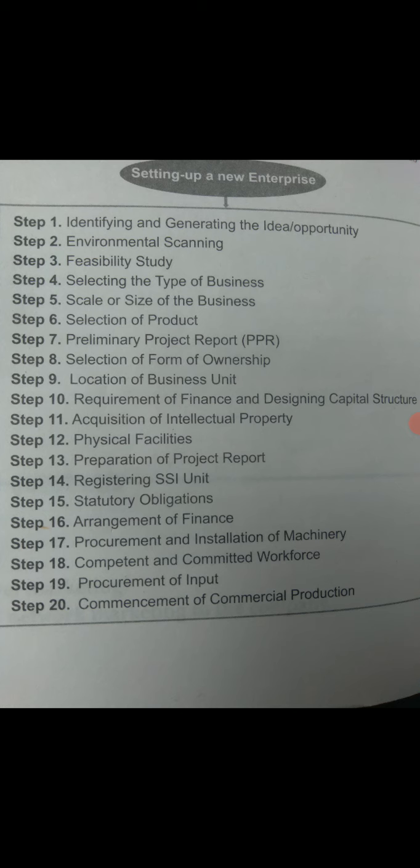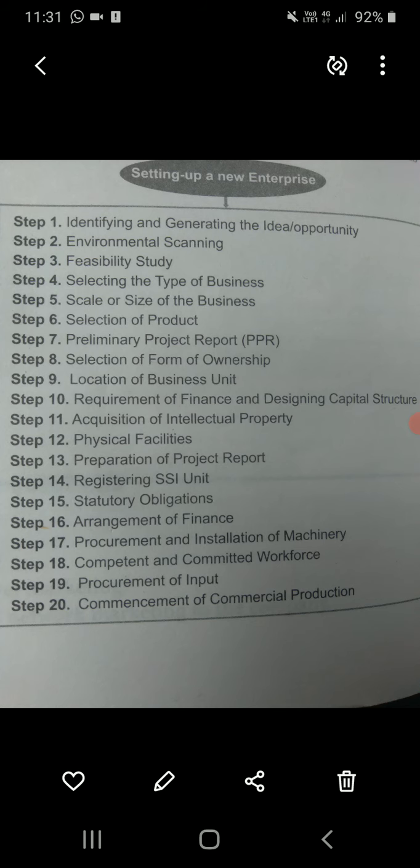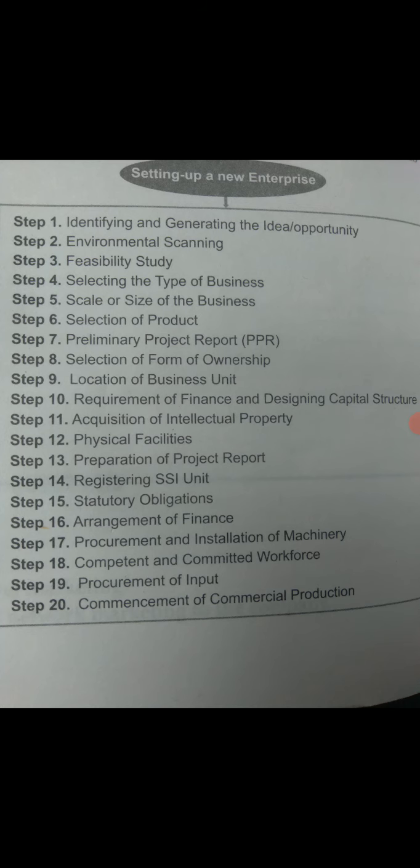The twelfth step is physical facilities. Here, decisions are made about the type of machinery, acquisition of manufacturing know-how, and equipment. This depends on the size of business, scale of business activities, and type of business activities.